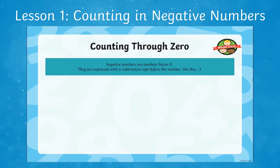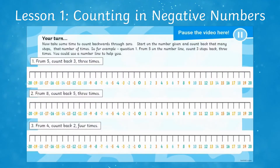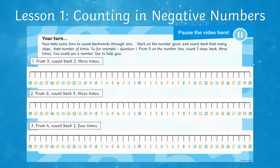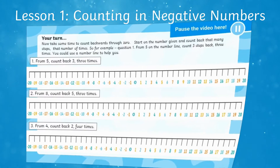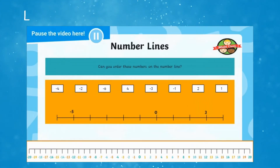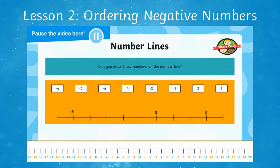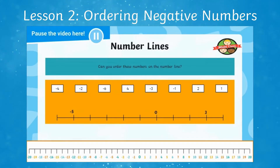Negative numbers are numbers below zero. Now take some time to count backwards through zero. Start on the number given and count back that many steps, that number of times. So let's have a look at this number line. Can you order these numbers on the number line? You could use the number line at the bottom of the screen to help you.